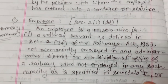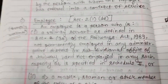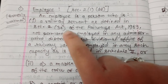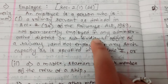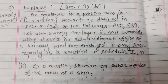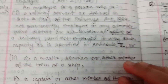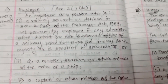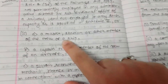It is section 2, clause 1, clause double D. An employee is a person who is a railway servant as defined in section 2, clause 34 of the Railways Act 1989, not permanently employed in any administrative district or subdivisional office of a railway, and not employed in any such capacity as is specified in Schedule 2, or a master,